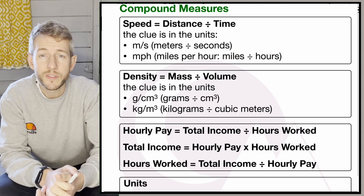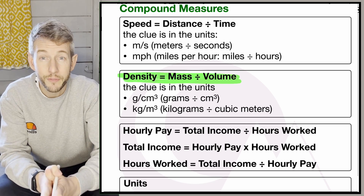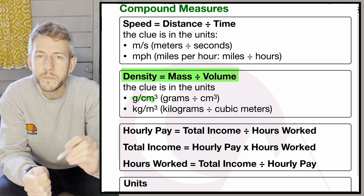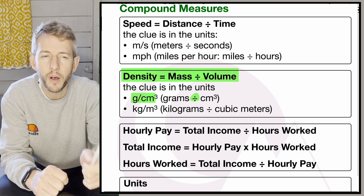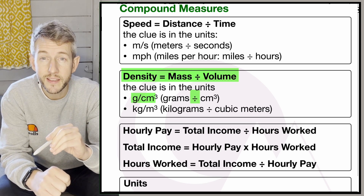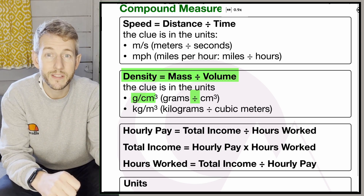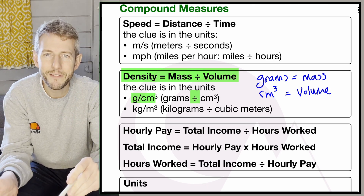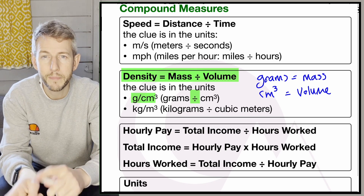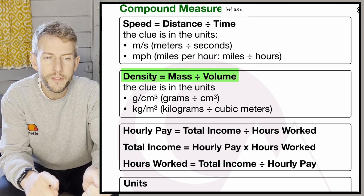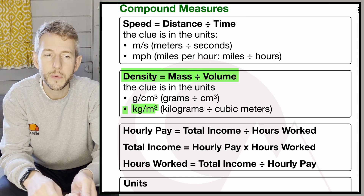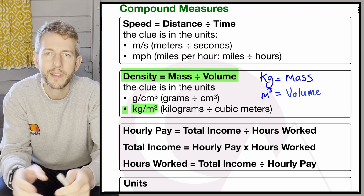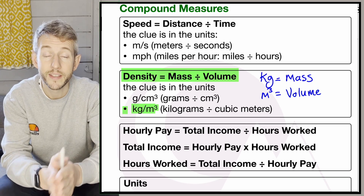Density equals mass divided by volume. Again, the clues are in the units. The unit for density is grams per centimetres cubed — that slash means divide — so density equals grams divided by centimetres cubed. Grams is a unit of mass and centimetres cubed is a unit of volume. Another example is kilograms per metres cubed, where kilograms is mass and metres cubed is volume.